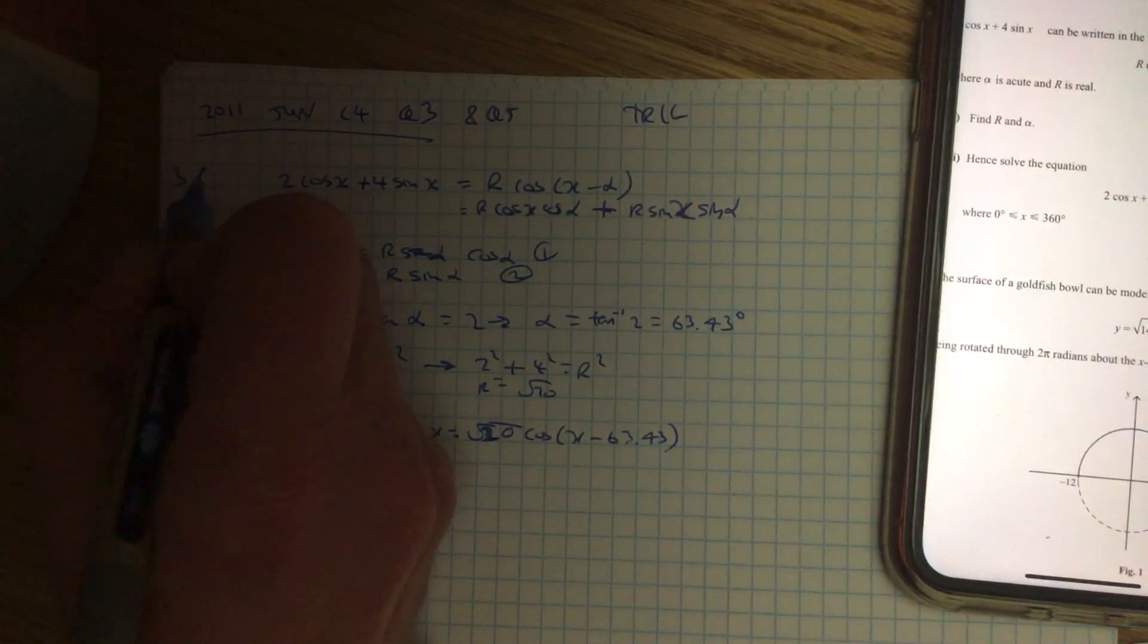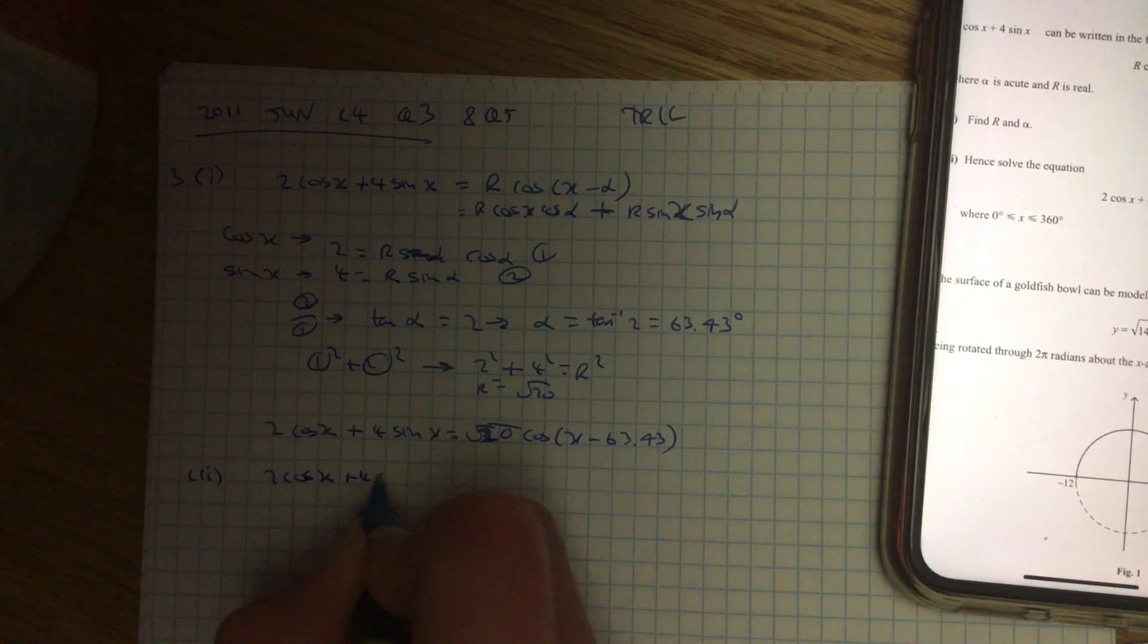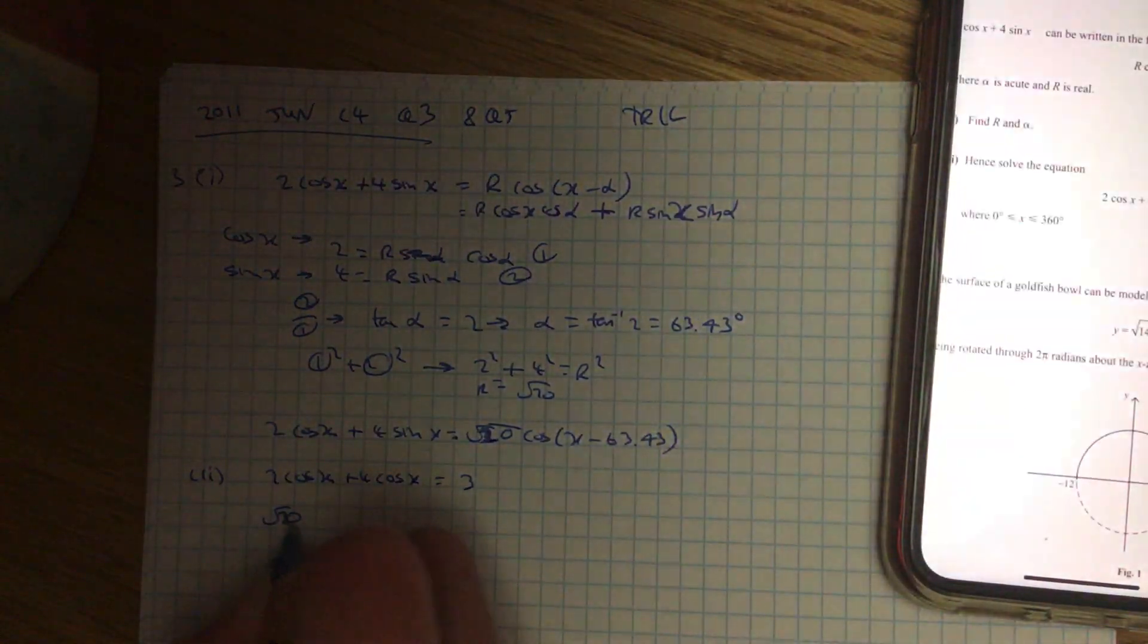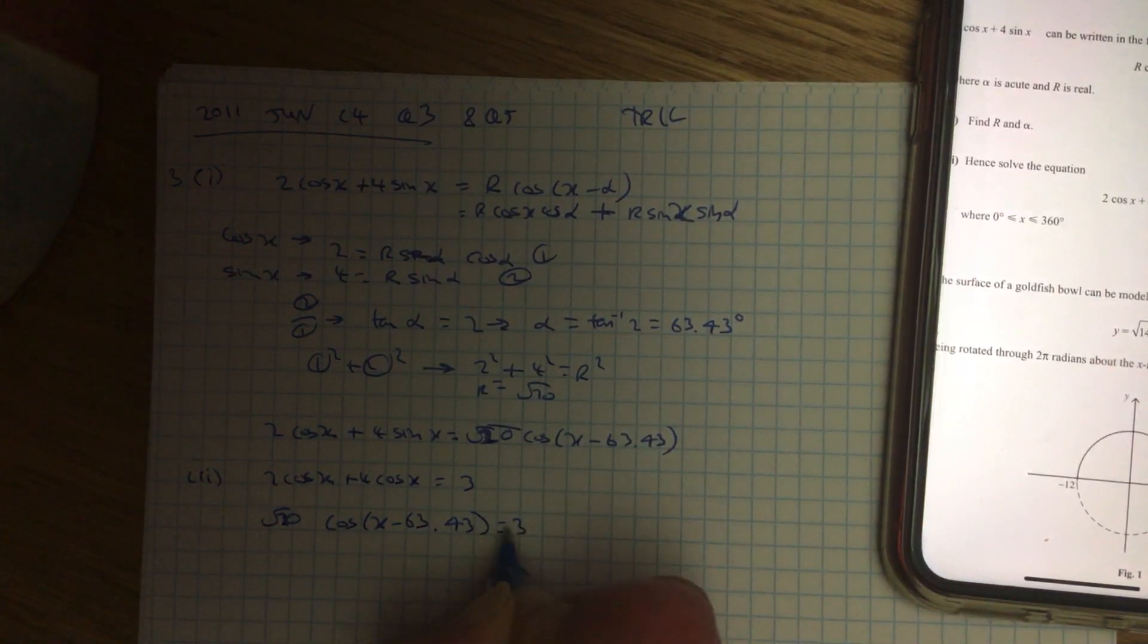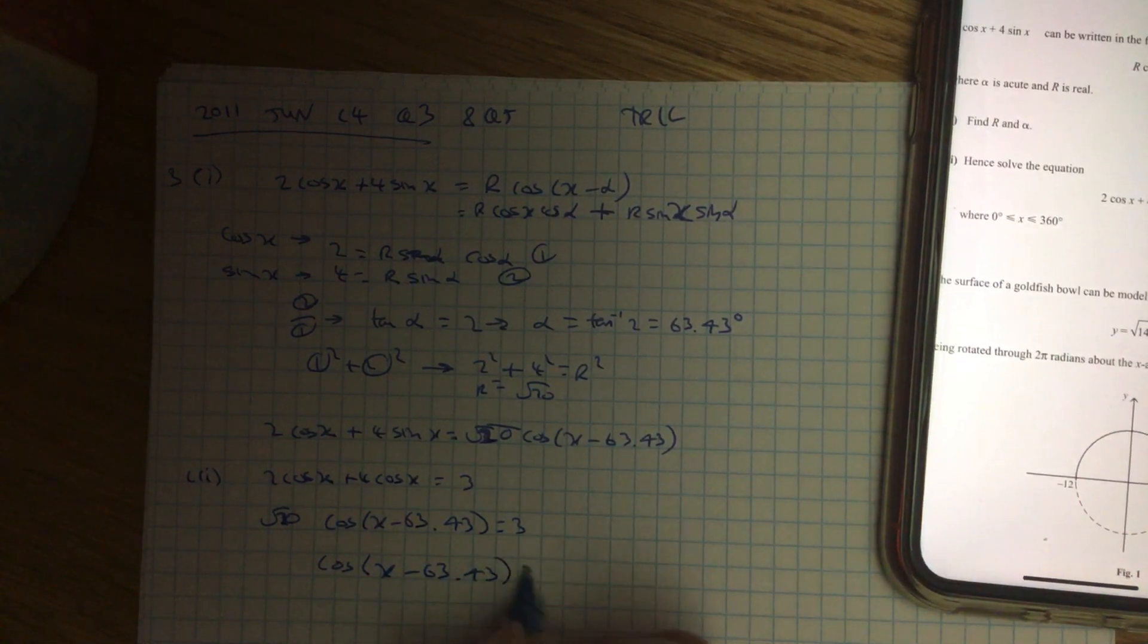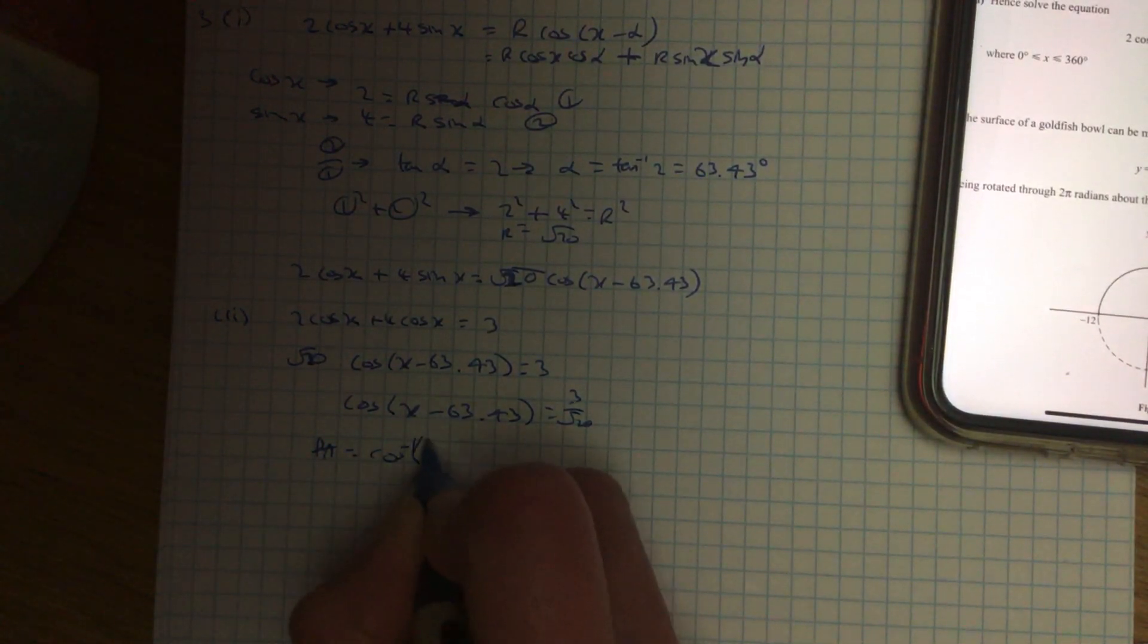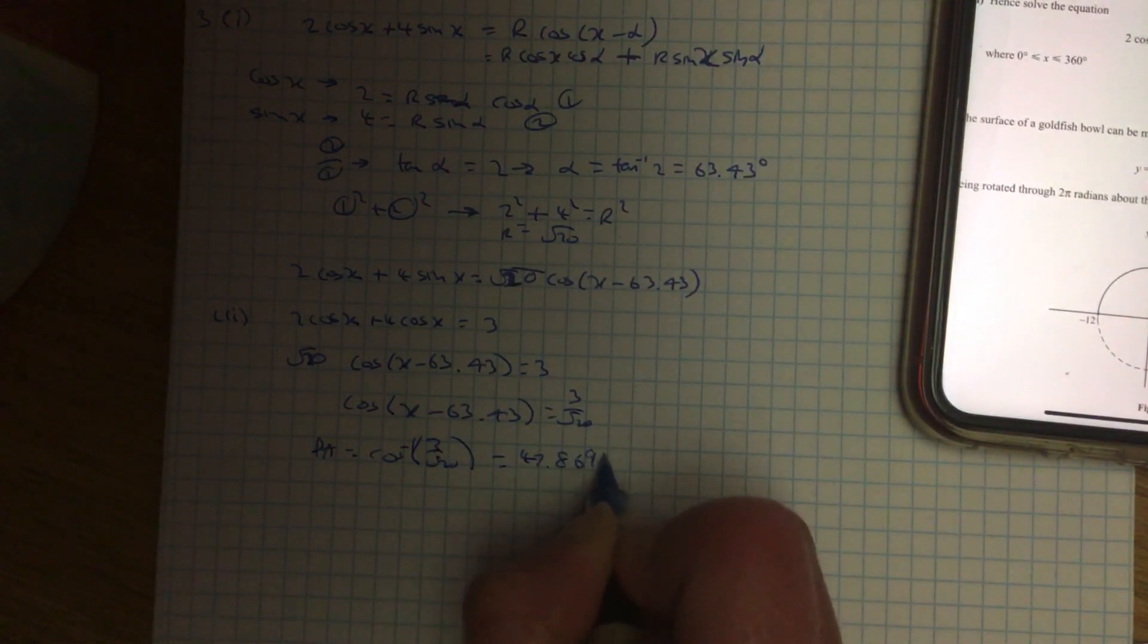So that's part one, so part two, I just put this equal to 3, so I don't use this side, I use the new expression I've just worked out. So it's the square root of 20, cos x minus 63.43 equals 3, bring your square root over and divide. So it's 3 over the square root of 20, find your principal angle, so it's inverse cos, 3 over root 20, which gives you 47.8695 degrees.